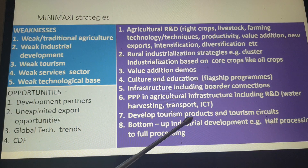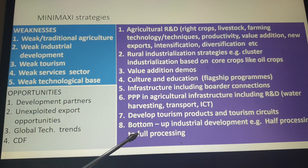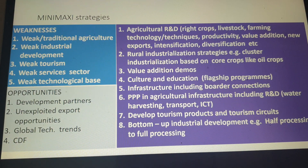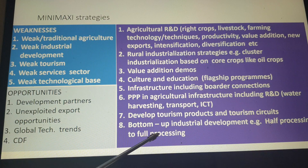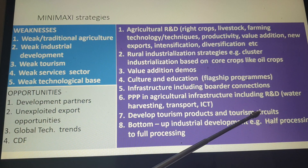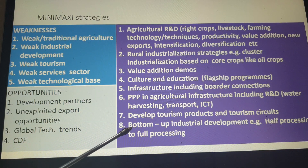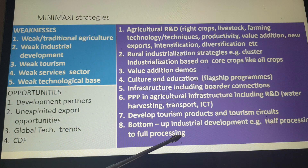Develop tourism products in the tourism circuits — we are addressing the weak tourism sector. Develop bottom-up industrial development: if we cannot fully process something, we can do cottage industries, half-processing, crude processing, and this bottom-up approach will feed the big industries at the top. We cannot focus on bottom-up alone — it has to be bottom-up and top-down together, so that the bottom of the pyramid is producing for the top to process.